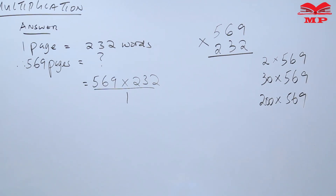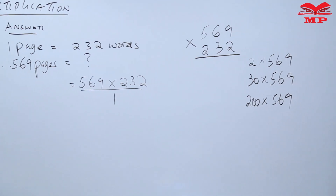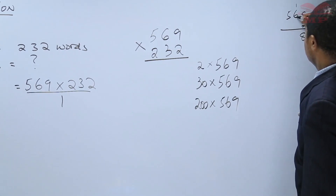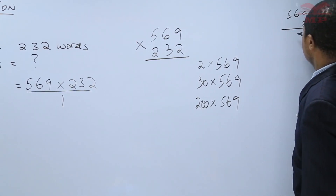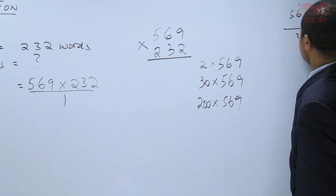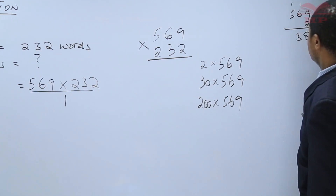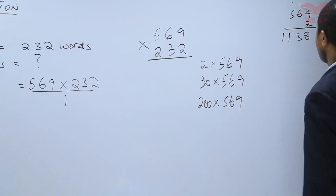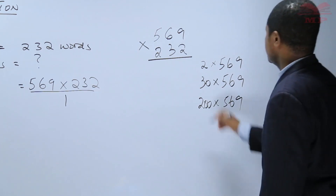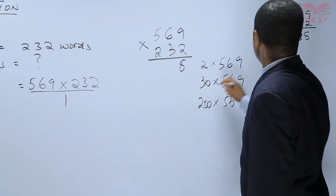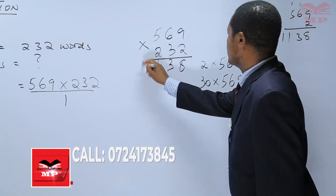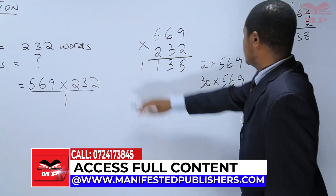So we will have our working here. 569 times 2: 9 times 2 is 18, write 8, carry 1. 6 times 2 is 12, plus 1 is 13, write 3, carry 1. 5 times 2 is 10, plus 1 is 11. So we write 8, 3, 1, 1.